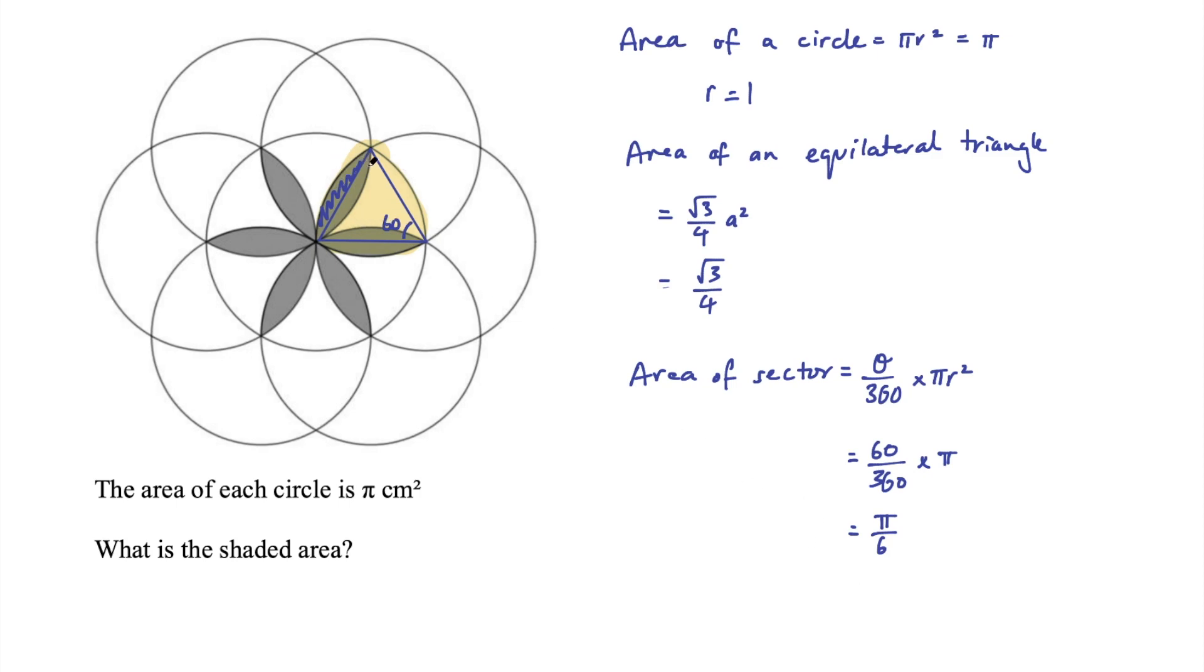Okay, I have the area of the sector. I'll just highlight that so it's clear what I'm talking about. So the area of the sector is that part. I want to subtract the equilateral triangle in blue, and that will give me the shaded blue area.